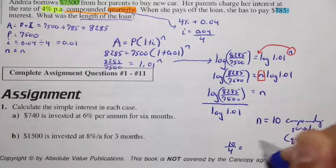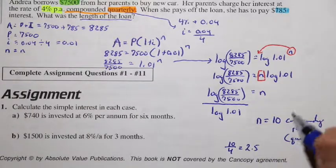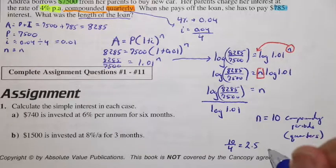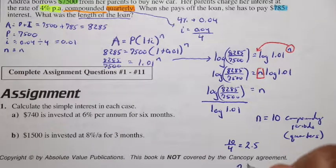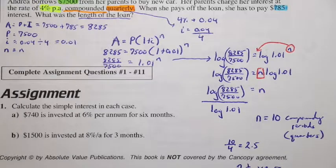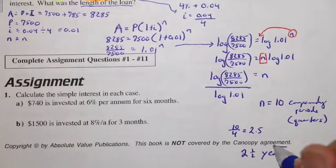10 divided by 4 is equal to 2.5. So we can say then, the length of time is 2 and a half years. 2 and a half years for this loan.